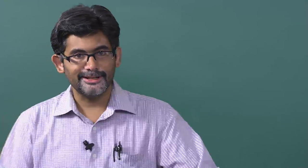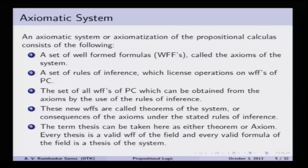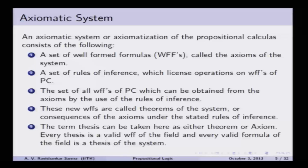Establishing validity is one issue; deriving a true formula from a given sequence of formulas is another. We use the term 'thesis' — it can be taken as either an axiom or a theorem. To say any well-formed formula is an axiom or a theorem, we sometimes use this word thesis. Every thesis is considered a valid well-formed formula of a given field, and every valid formula of that field is also considered a thesis of the system — either it should be an axiom, or it can be proved by reducing axioms using transformation rules and rules of inference.